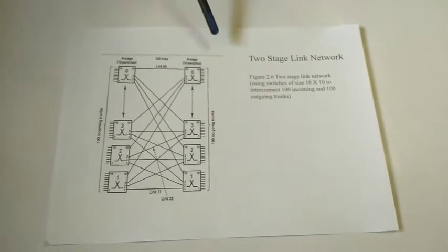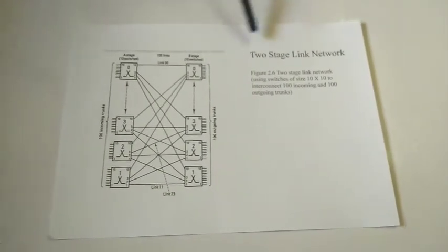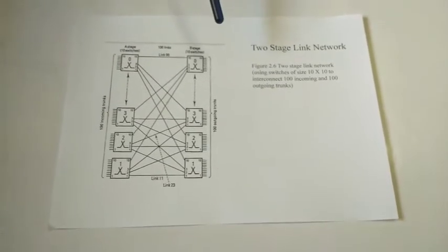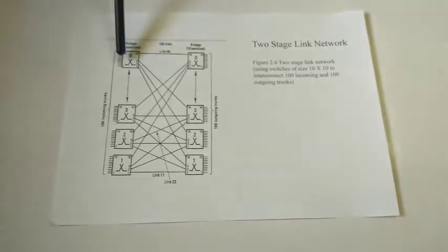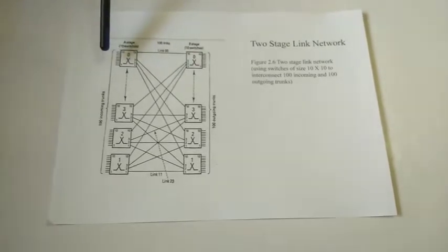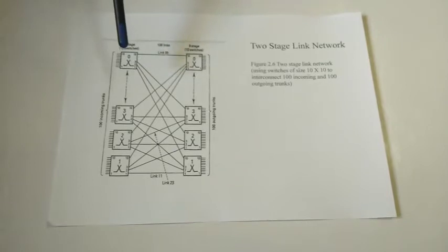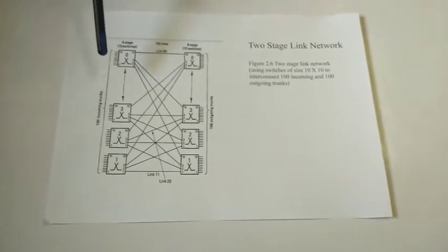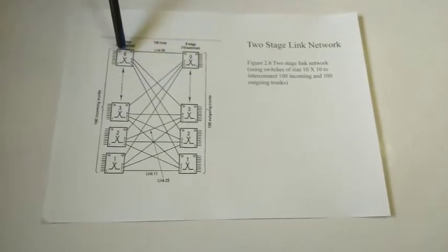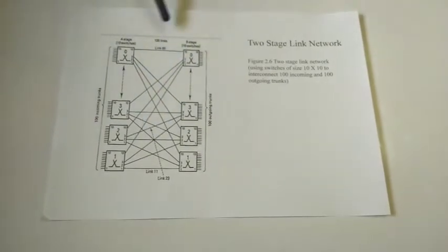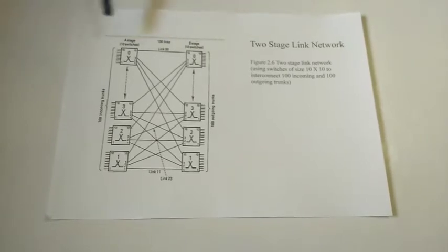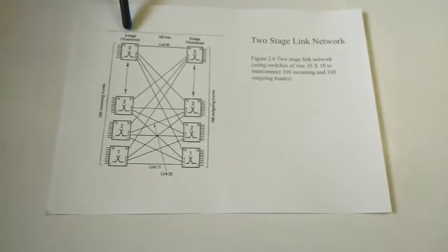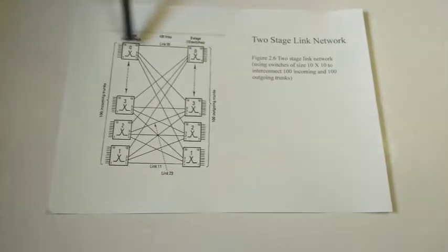You will get a most expected question in the exam: to explain a two-stage link network. In the earlier session we showed a crossbar system. A crossbar switch has the capacity to connect 10 switches to another 10 switches, and it can be used in place of a two-motion selector. If you want more connections to the exchange, you need to increase the group of selectors. Here we have selected a two-stage link network, shown in the diagram. This side is called A stage and B stage, which are connected with links.